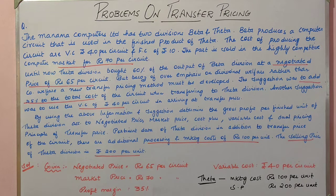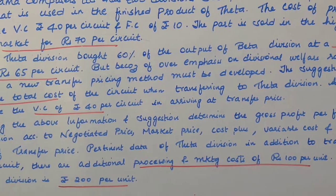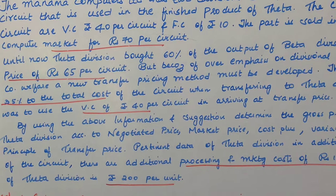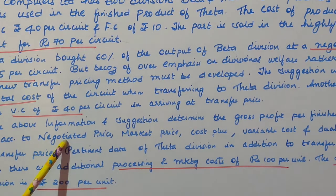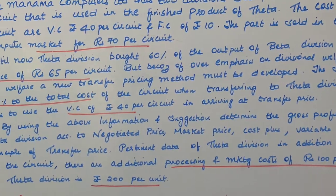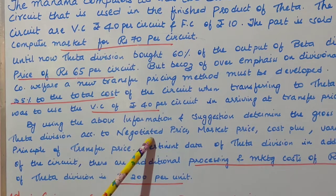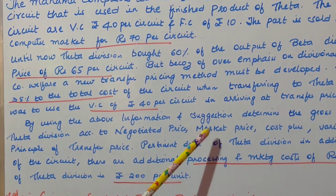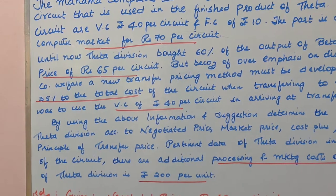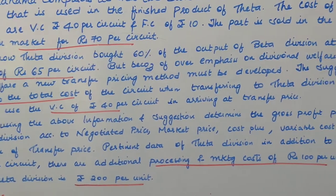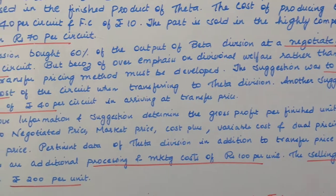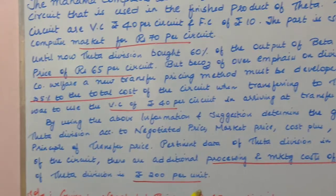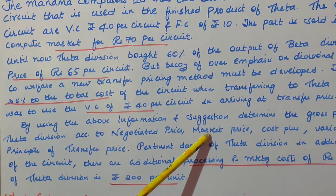Let me give you a glance at what these pricing methods are. Negotiated price is when a transfer price is fixed on the basis of negotiation between the selling company and the buying company — that is, a price fixed through discussion between buyer and seller. Market price is a transfer price fixed on the basis of the real market price of that output; the prevailing market price is used as the internal transfer price.